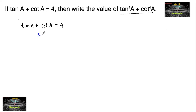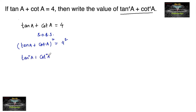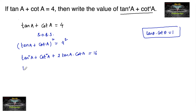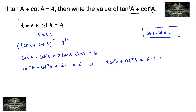Squaring both sides: tan(a) plus cot(a) whole square equals 4 squared. So tan²(a) plus cot²(a) plus 2 times tan(a) into cot(a) equals 16. Since tan(θ) into cot(θ) equals 1, we get tan²(a) plus cot²(a) plus 2 equals 16, which gives tan²(a) plus cot²(a) equals 14.